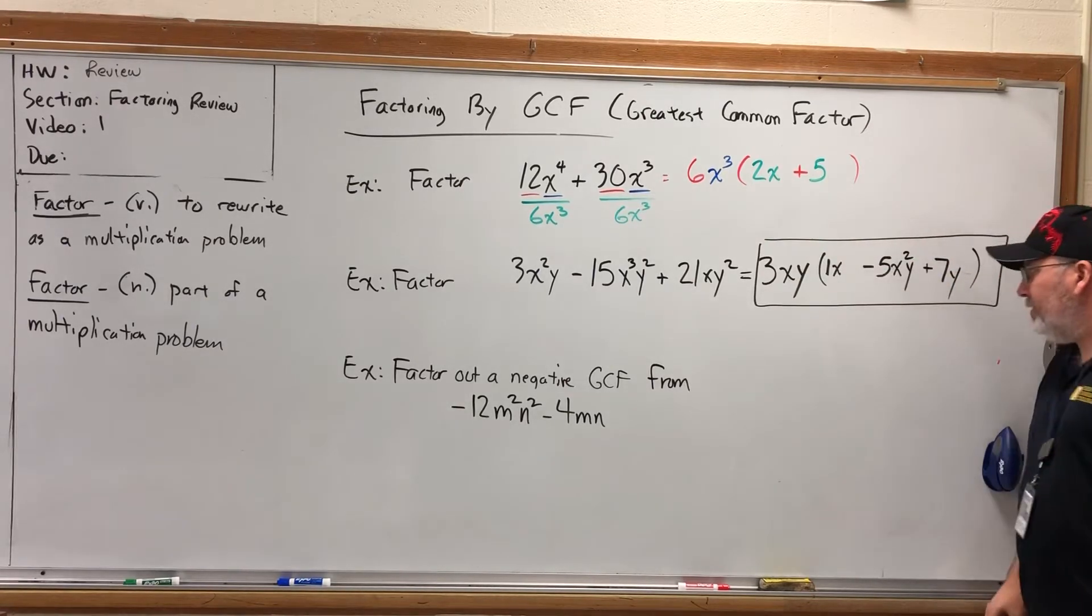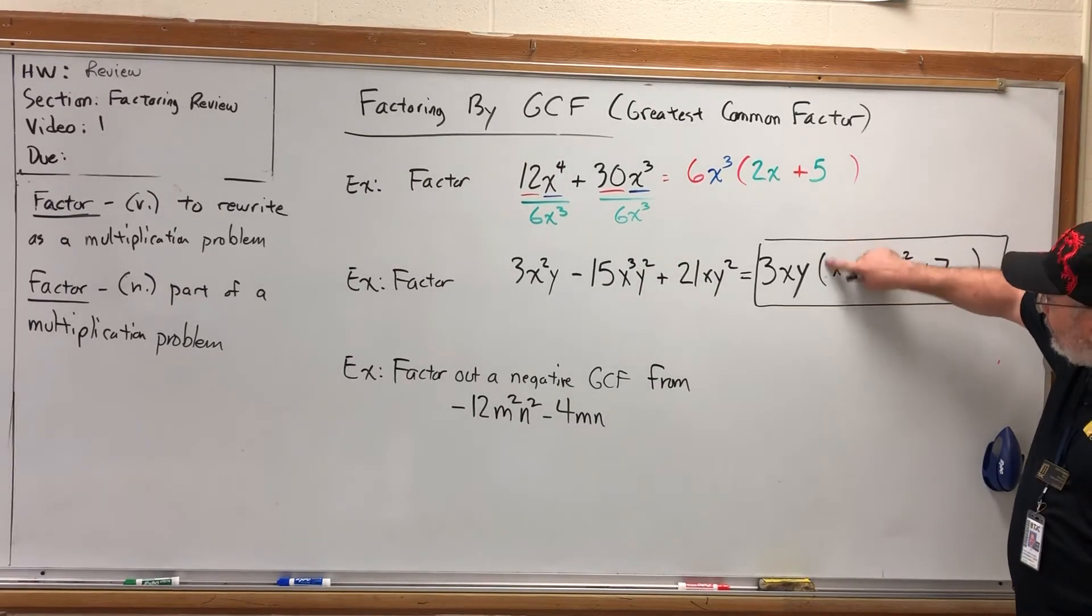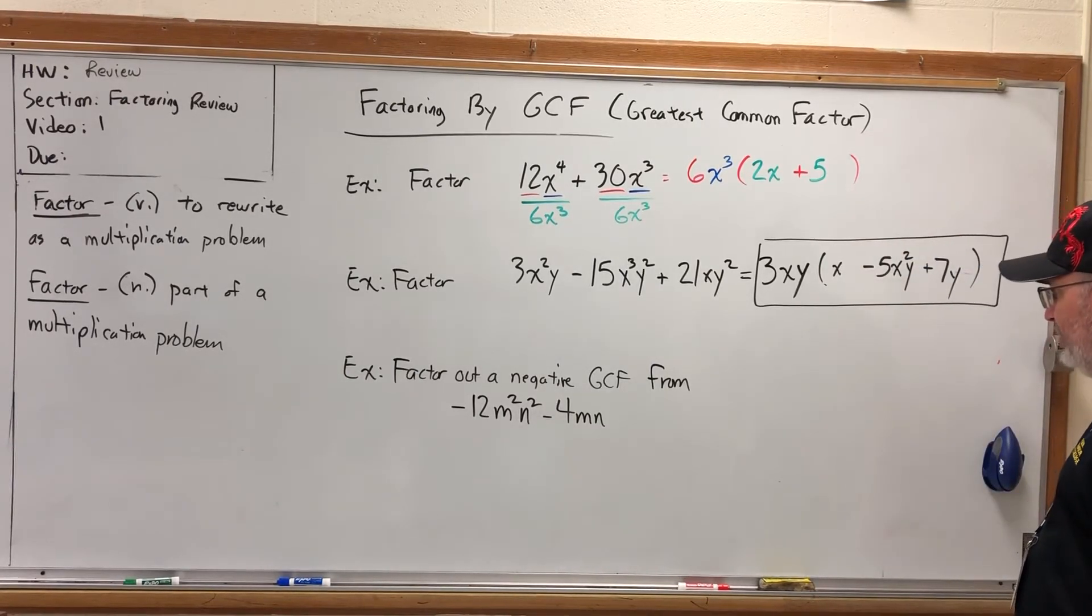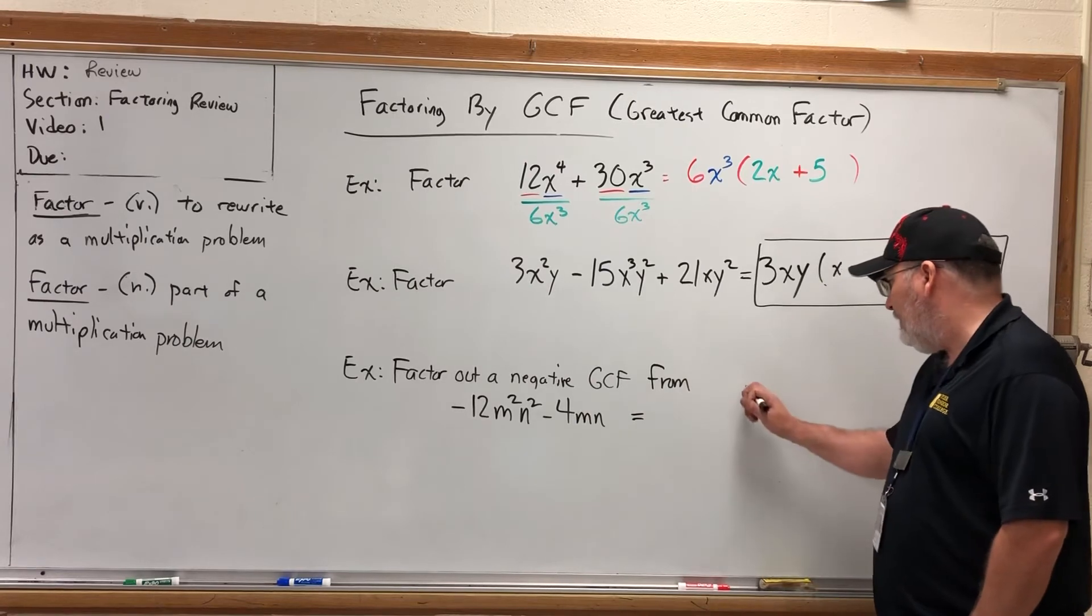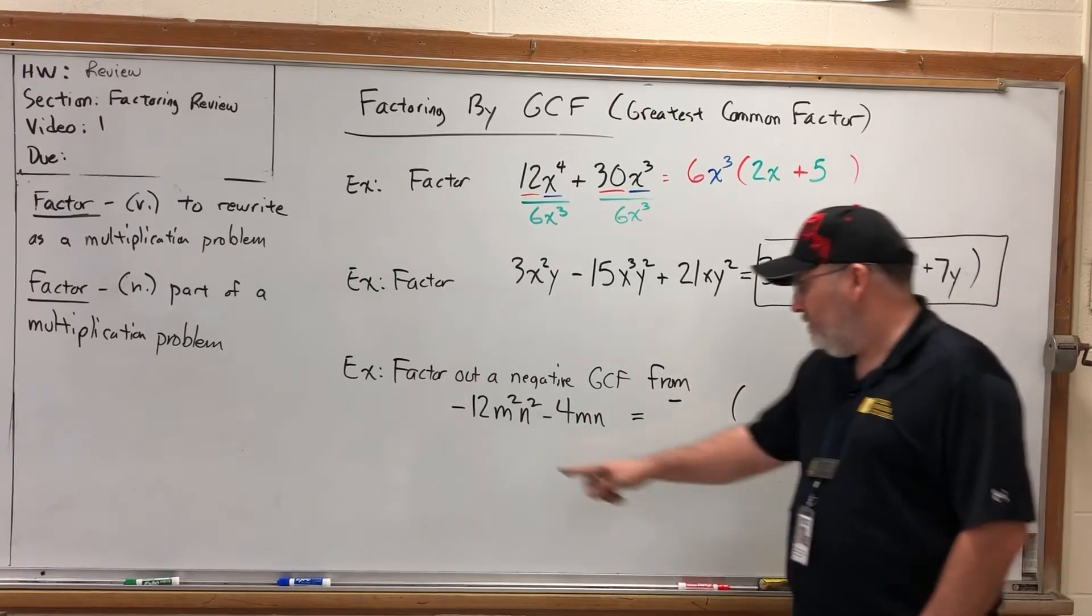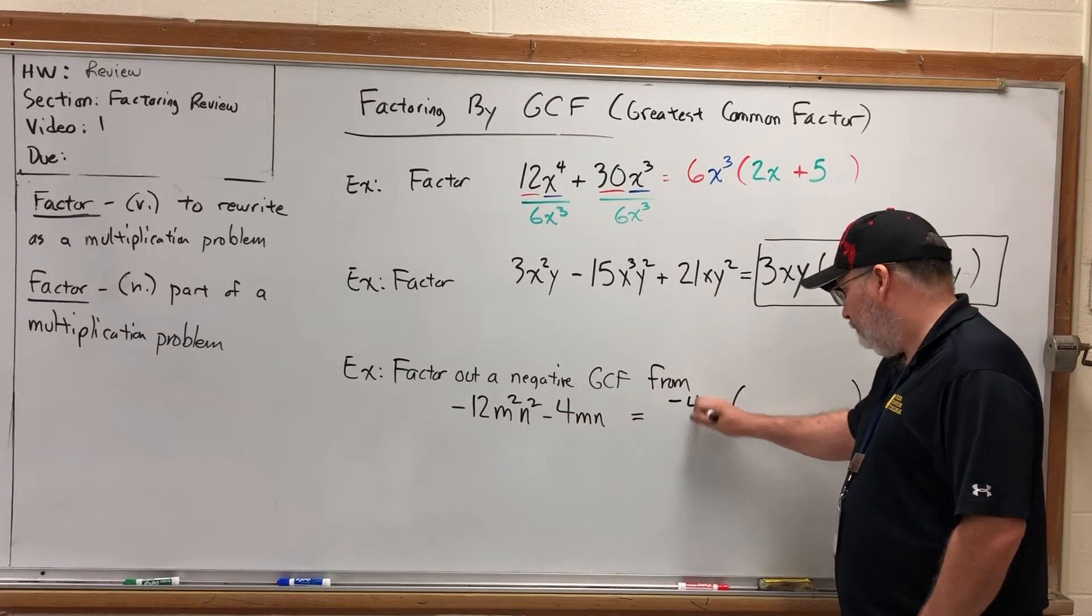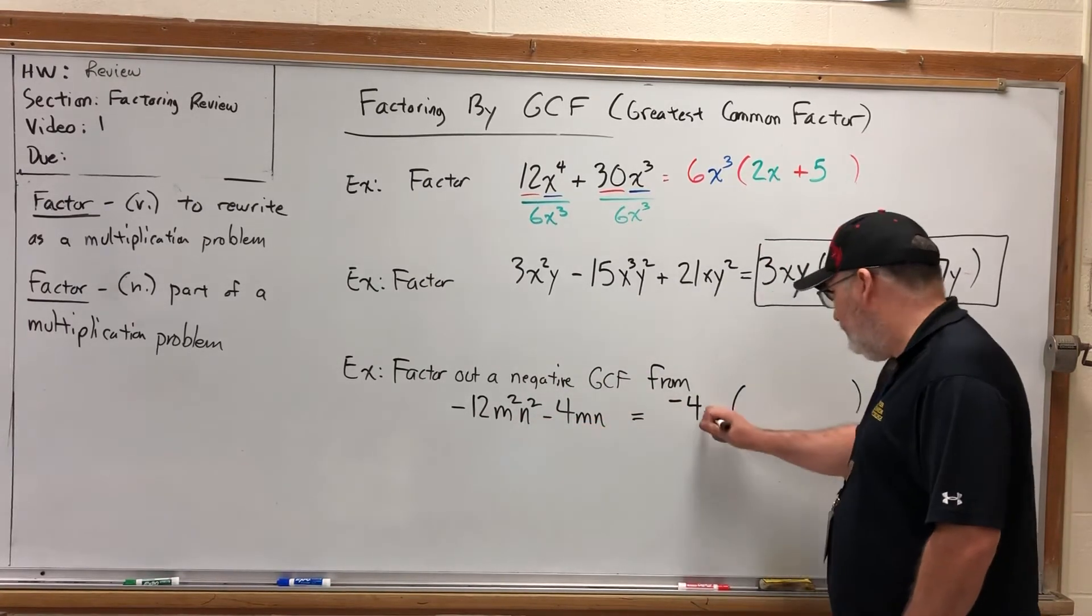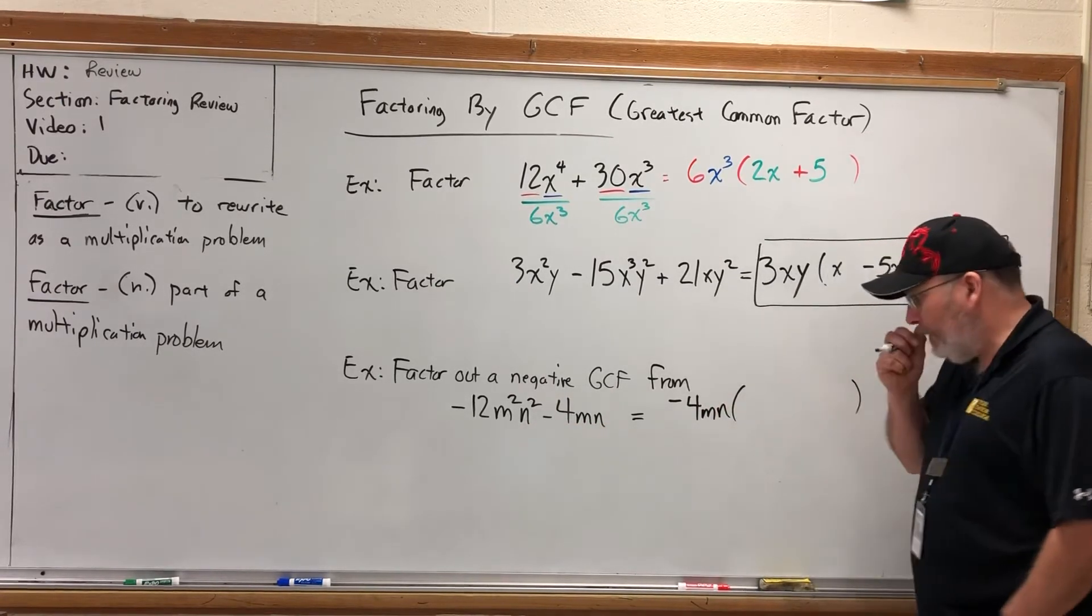And there you go. Now, in this answer, there is one piece that is unnecessary because it's implied, and that would be the one. So it's not wrong, but it's also not necessary. Now, the last one to factor out a negative GCF, it's pretty much business as usual, except as the instructions imply, your GCF is going to be negative. What impact will that have? We'll see in a moment. So we're going to factor out a negative GCF. Let's look at the 12 and the 4. The greatest common factor to those is 4. Let's look at the m's. Everybody has some m's. Here's the smaller of the two powers. And let's look at the n's. Everybody has some n's. Here's the smaller of the two powers.